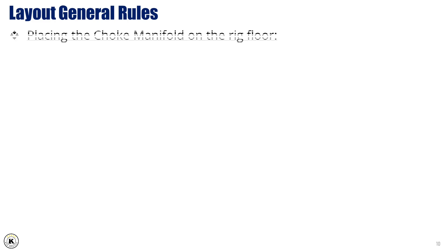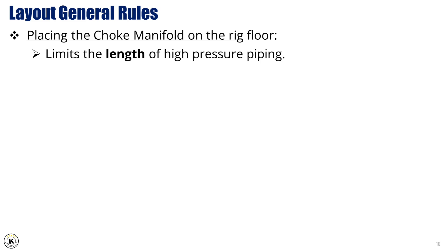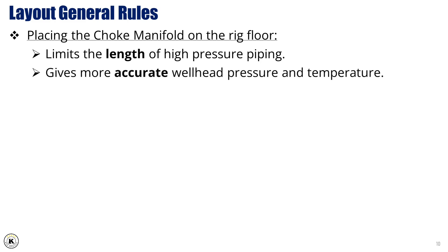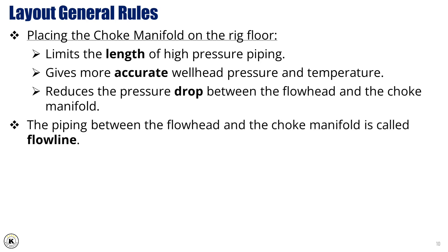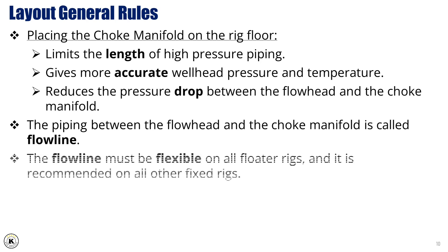Layout General Rules. Placing the choke manifold on the rig floor limits the length of high-pressure piping, gives more accurate wellhead pressure and temperature, and reduces the pressure drop between the flow head and the choke manifold. The piping between the flow head and the choke manifold is called the flow line. The flow line must be flexible on all floater rigs, and it is recommended on all other fixed rigs.